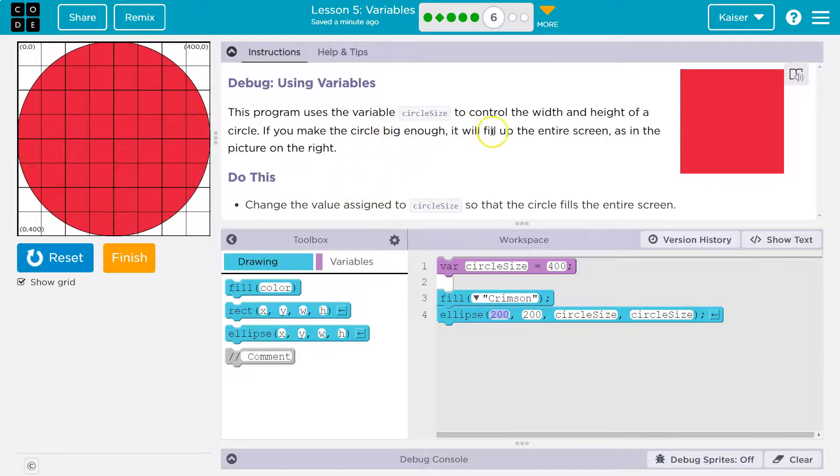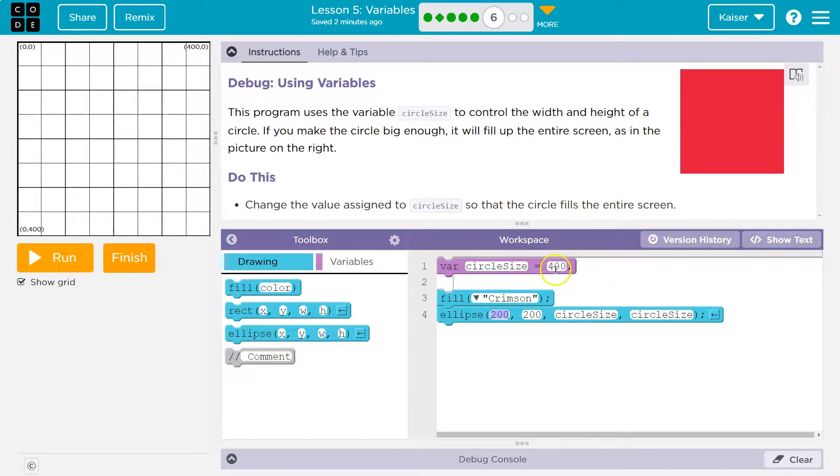What are we going to do? If you make the circle big enough, it will fill the whole screen as in the picture on the right. Do this, change the value assigned to circle size so the circle fills the screen. Oh, okay.